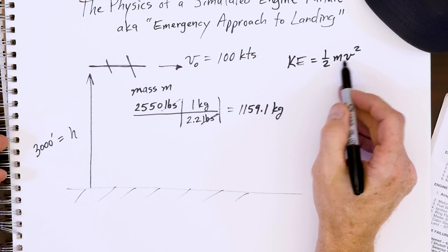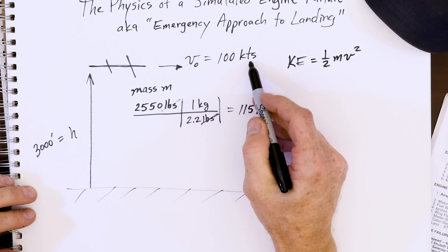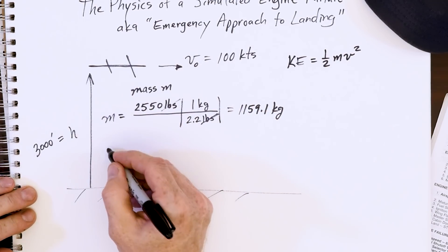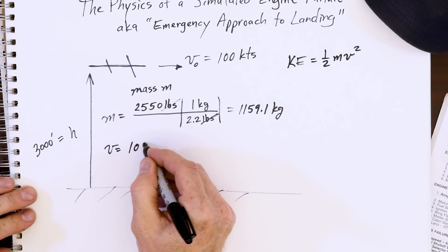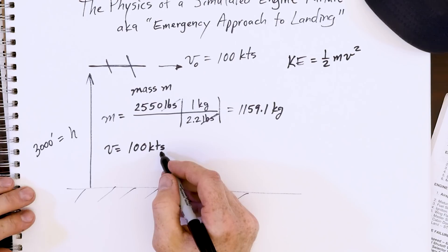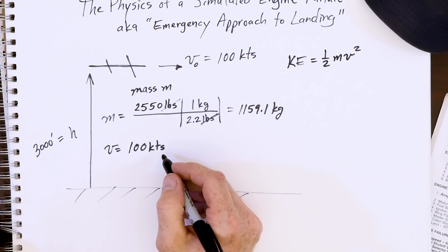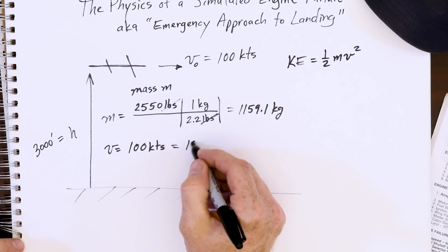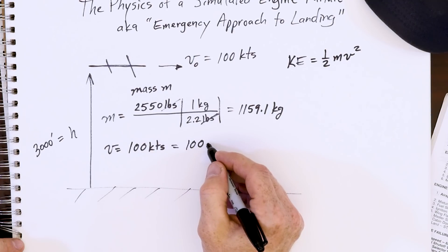Now we need the velocity so we can get the total energy of this aircraft. Our velocity is 100 knots. So our velocity is 100 knots or you can write it out K-N-O-T-S which comes from the history of nautical sailors where they actually threw a rope out with knots in it and counted them and used a stopwatch or hourglass or something.